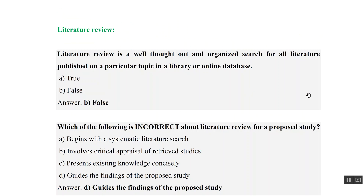Let us see some questions. Literature review is a well thought out and organized search for all literature published on a particular topic in a library or online database. At first the sentence looks correct — it is well thought and organized search, yes, true. But searching for all literature published on a topic is not correct; we only search for what is relevant to our research question.